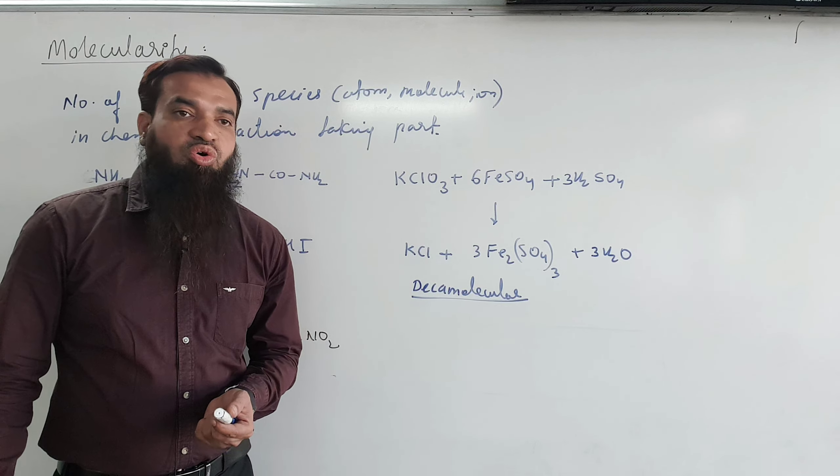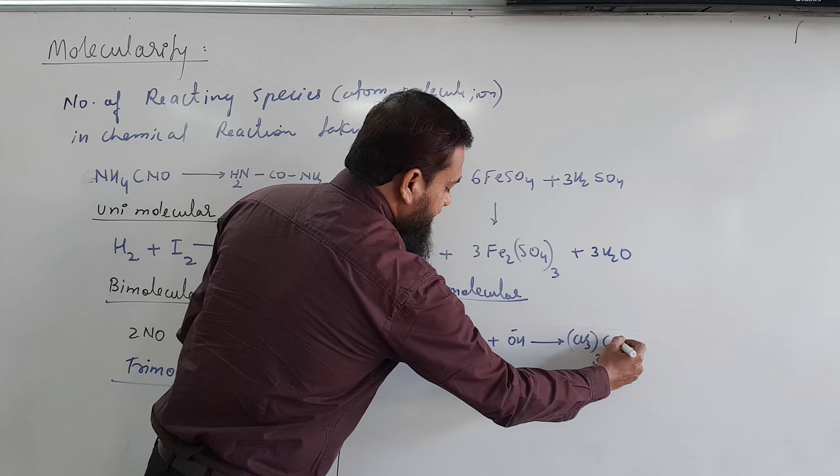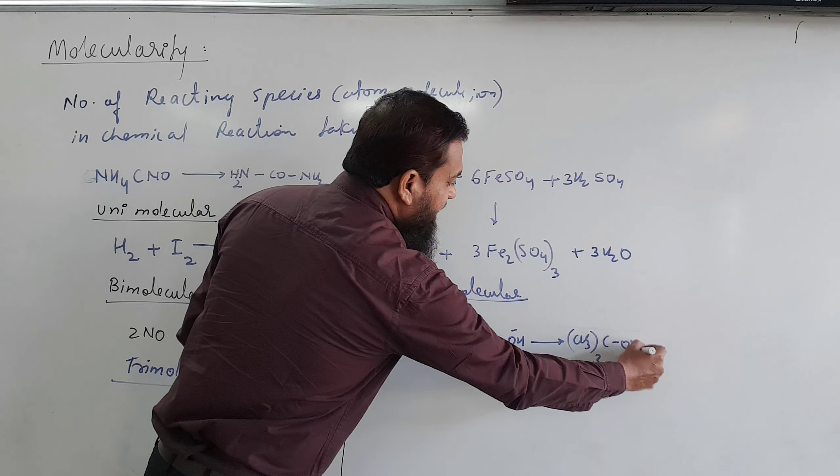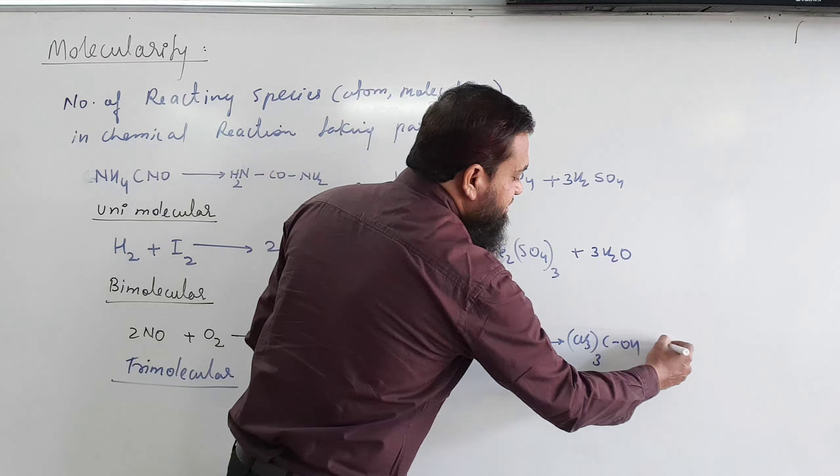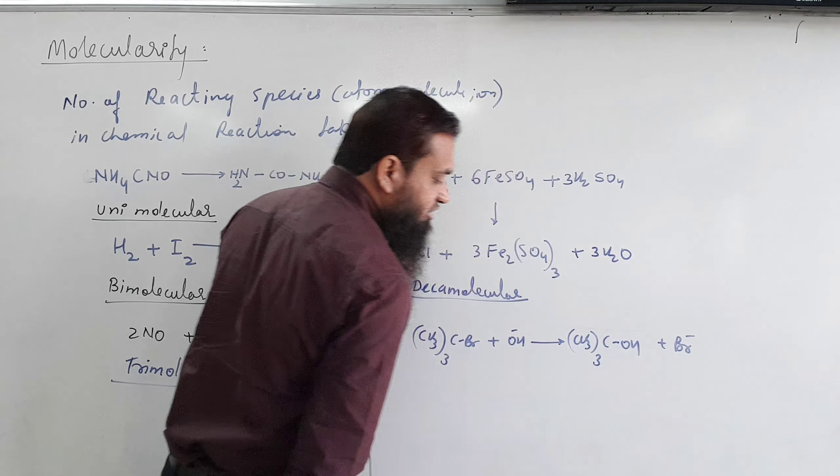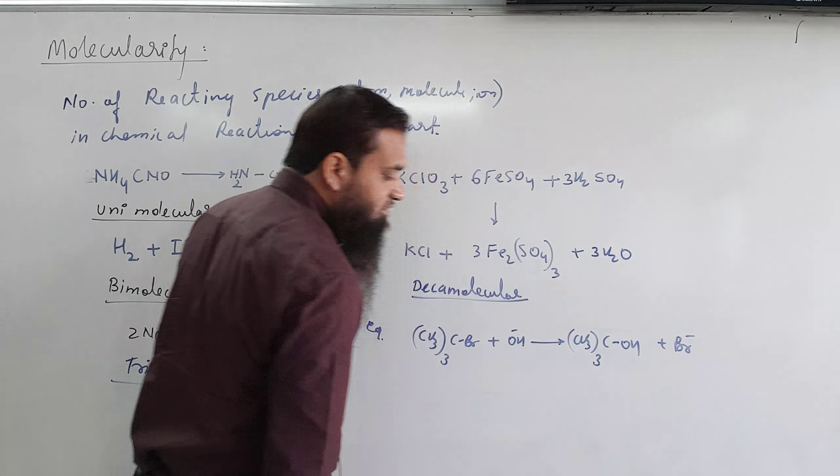For example, tertiary butyl bromide plus OH⁻ gives tertiary butyl alcohol — Br leaves and OH comes in. This is a substitution reaction. So looking at the reaction, it appears to be bimolecular.